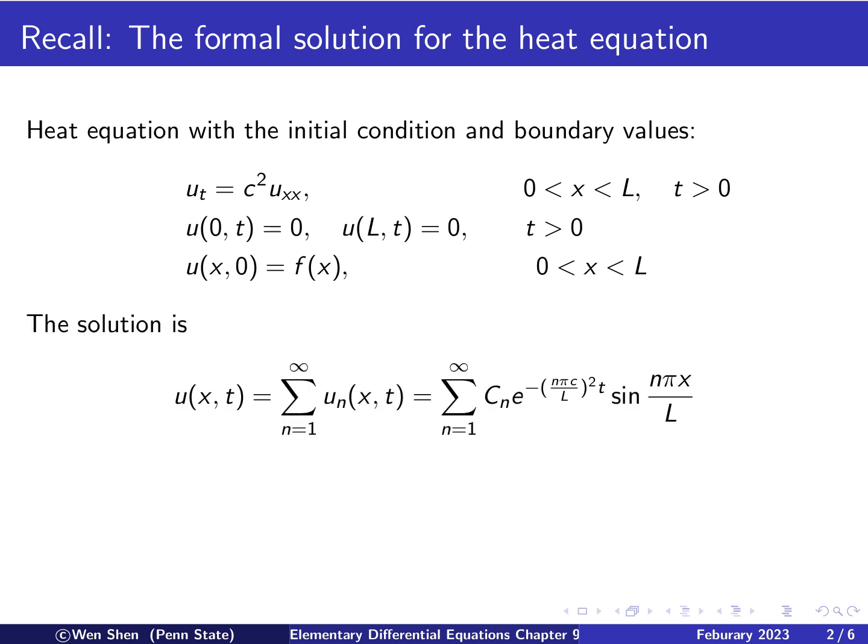So by using the separation of variables and Fourier series, we have a formal solution in terms of a series. And the solution is the sum of all these functions we call un, and adding them all up. And the un takes this form, cn, an exponential function with a decay, times a sine function in the space x.